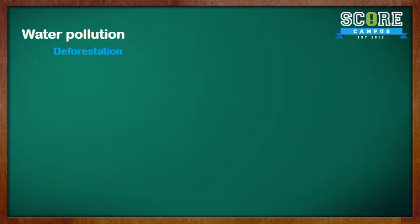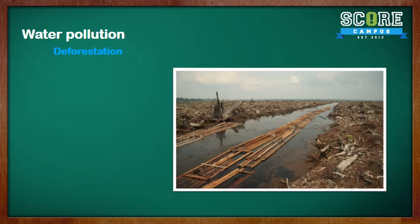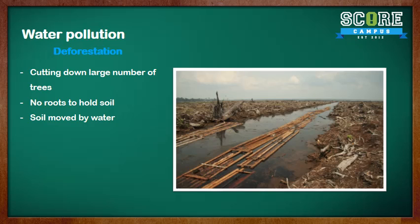Another form of water pollution is deforestation. Deforestation is the cutting down of a large number of trees. Because of this, there are no roots to hold the soil together, and so the soil can be easily moved by rain and wind into nearby water sources. The water gets murky, as you can see here.